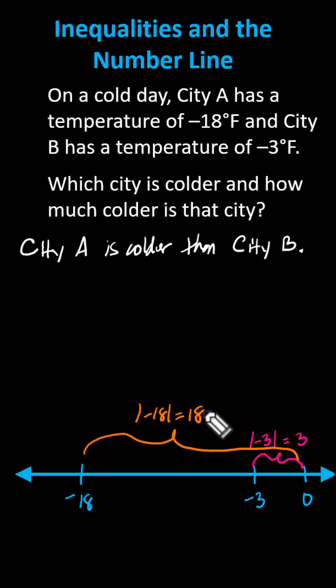To find how much colder city A is than city B, we can find the difference of the absolute value of negative 18 and the absolute value of negative three. The absolute value of negative 18 minus the absolute value of negative three is equal to 18 minus three, which equals 15.